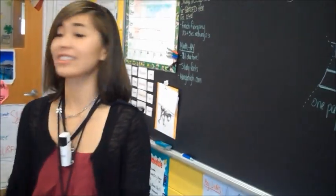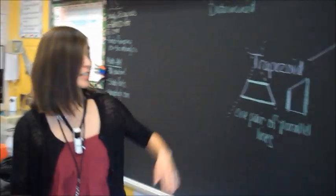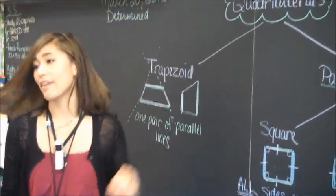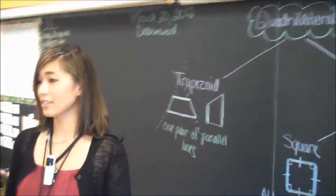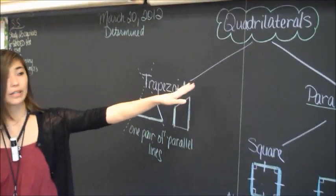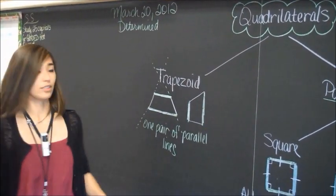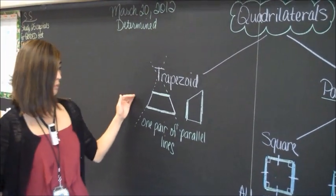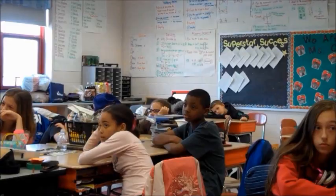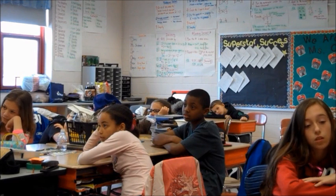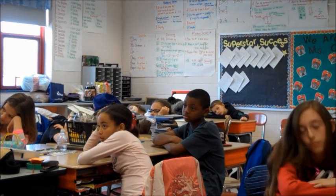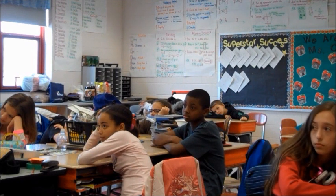All right, boys and girls, so today we're doing our lesson on quadrilaterals. Quadrilaterals are polygons that have how many sides? Four. And there are different ways that we can classify quadrilaterals. There is a trapezoid, which has one pair of parallel lines. And you could also classify it as a parallelogram, which has two pairs of parallel lines.